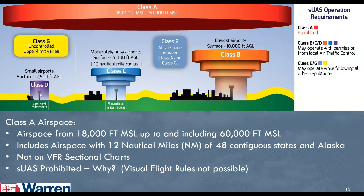These aren't always 100%, but generally, Class D is often small airports from the surface to 2,500 feet AGL with a radius of about four nautical miles. Class C has a lower section radius of about five nautical miles and an upper section radius of normally 10 nautical miles. These are moderately busy airports that go from the surface to 4,000 feet AGL. Class B serves the busiest airports — near us, that would be the New York City airports and Philadelphia's airport — going from the surface to 10,000 feet AGL.